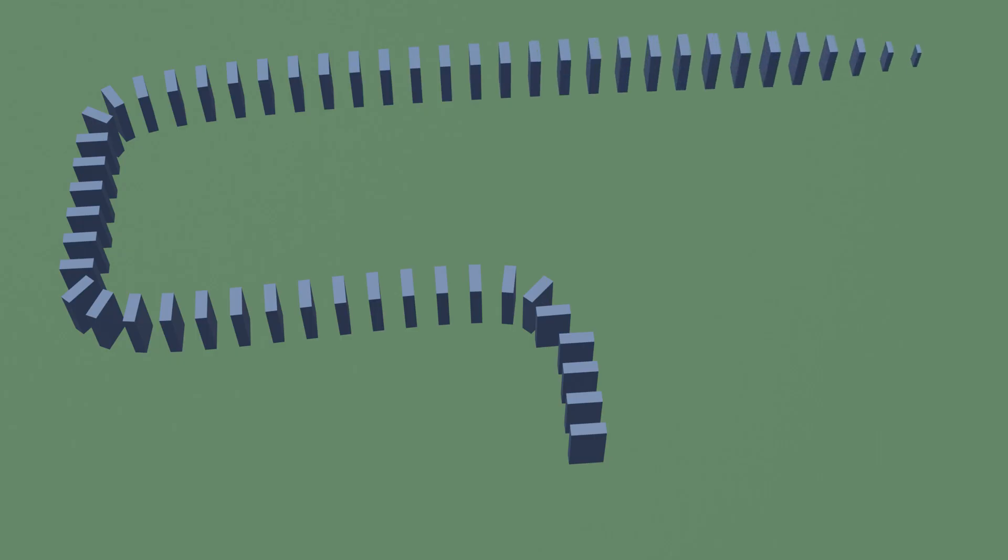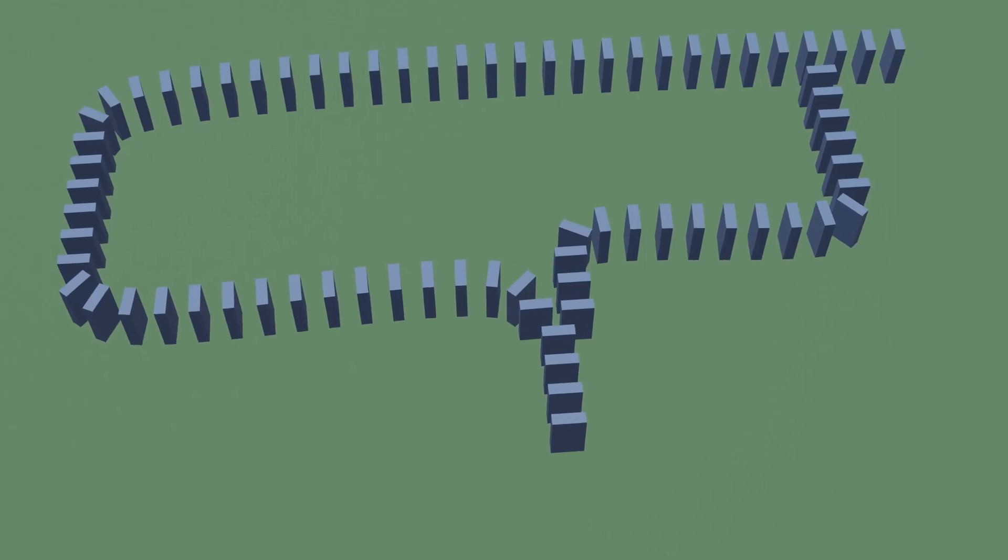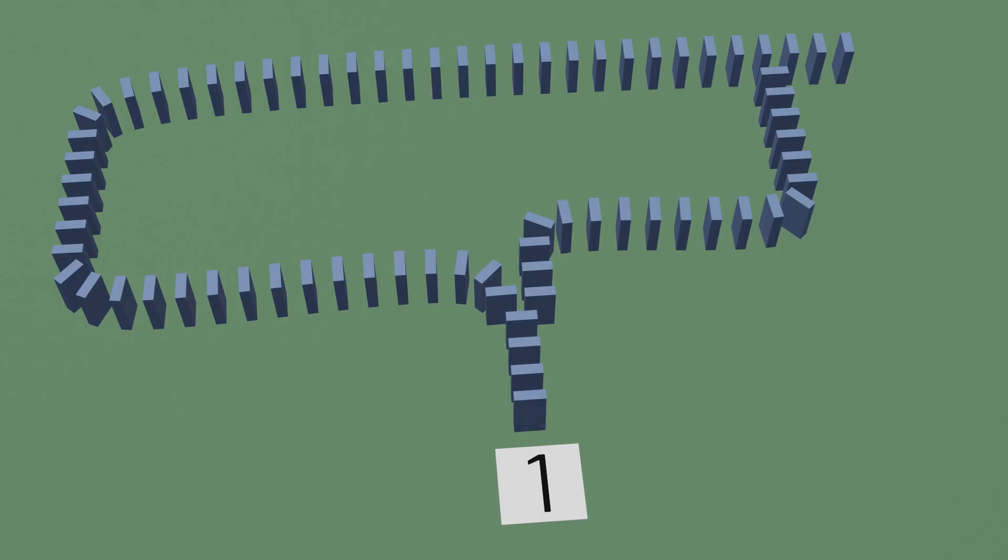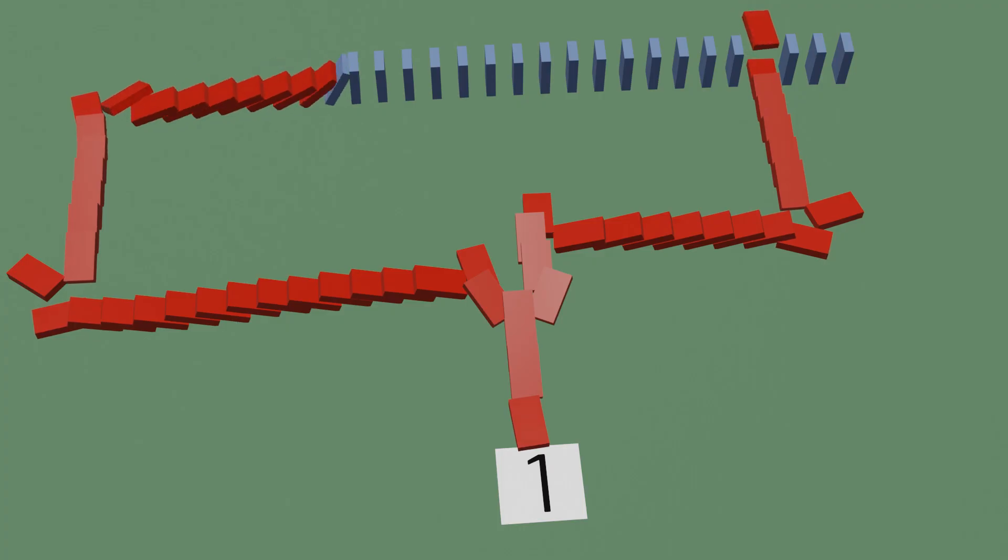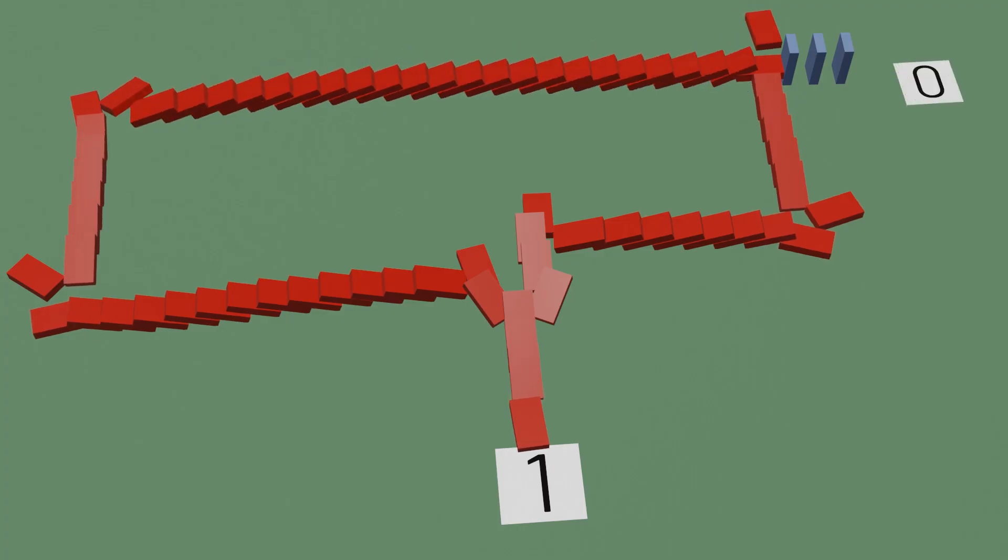We'll start with one input that has a relatively long path to the output. We'll then add an extra path coming out of that input that can interrupt the longer path, so to speak. If the input is pushed, then the shorter path of dominoes will interrupt the longer path of dominoes, and the output at the end won't fall over.